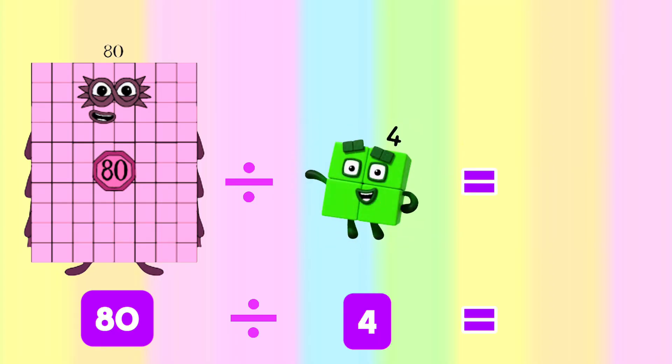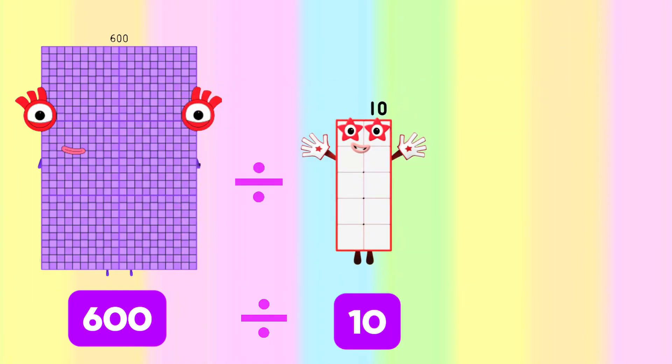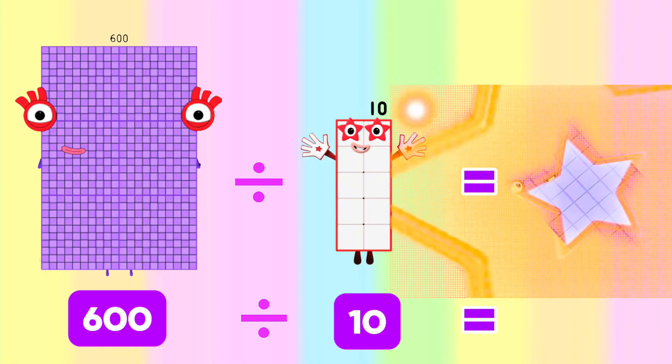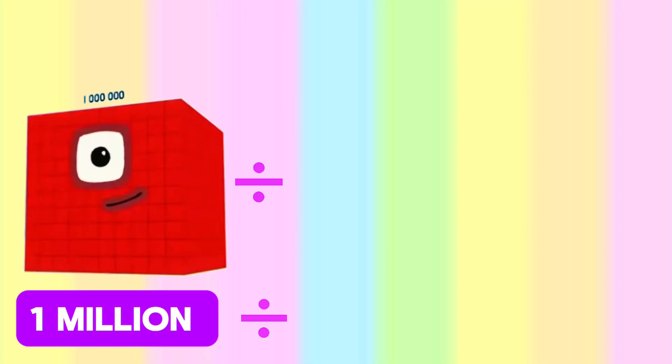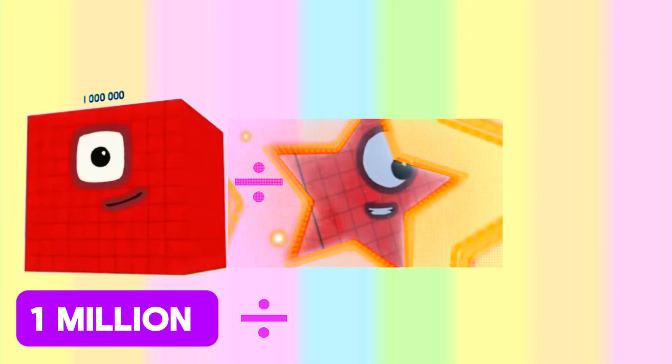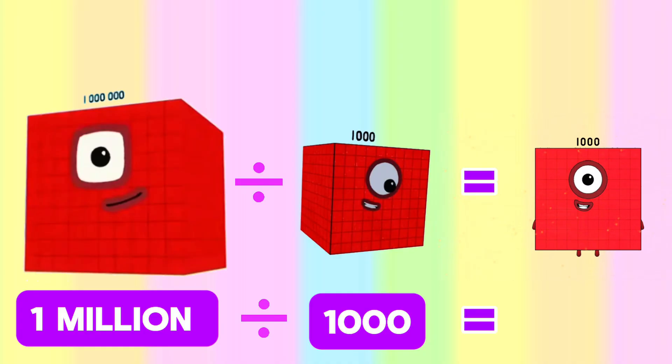80,000 divided by 4 is equals to 20. 6,000 divided by 10 is equals to 60. 1,000,000 divided by 1,000 is equals to 1,000.